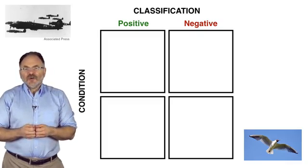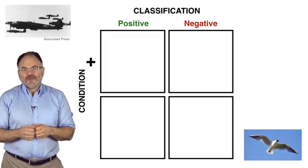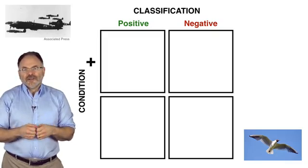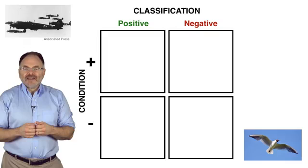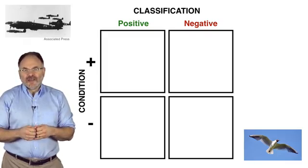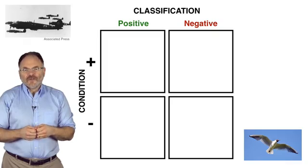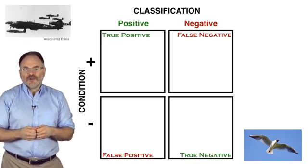It is traditional to locate the actual conditions to the left of this grid, the condition that we are trying to identify above, that's bombers, and the alternative, seagulls below. The classification itself is placed above the grid, a positive classification to the left, a negative to the right. This allows us to label the four squares on the grid: true positive, false positive, false negative, and true negative.